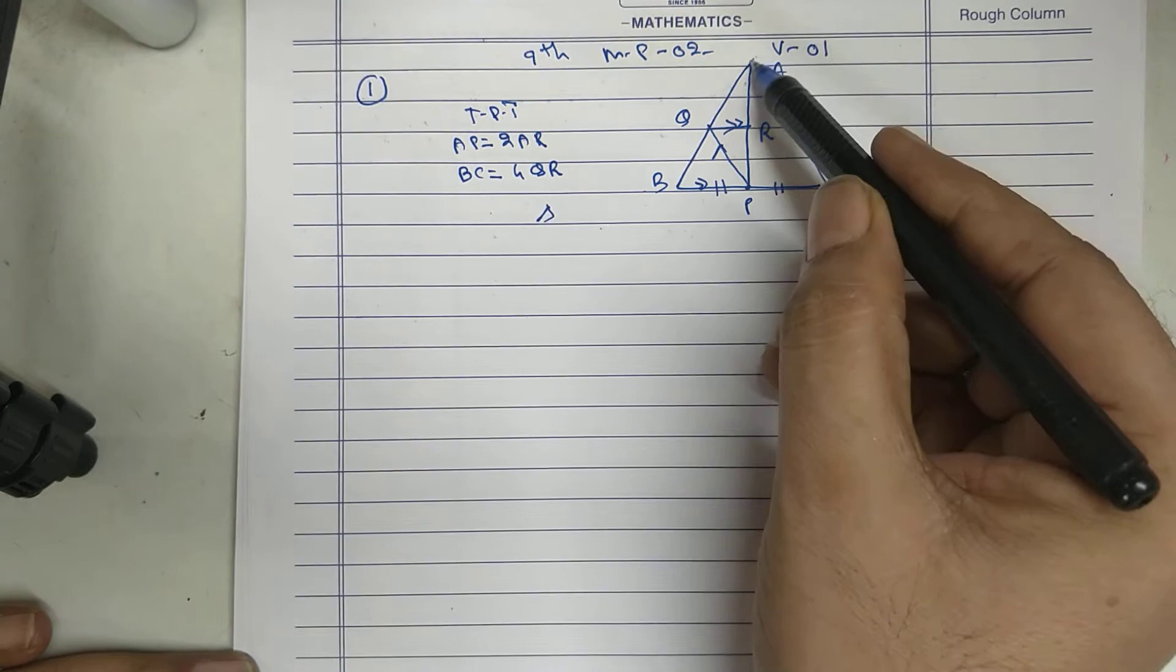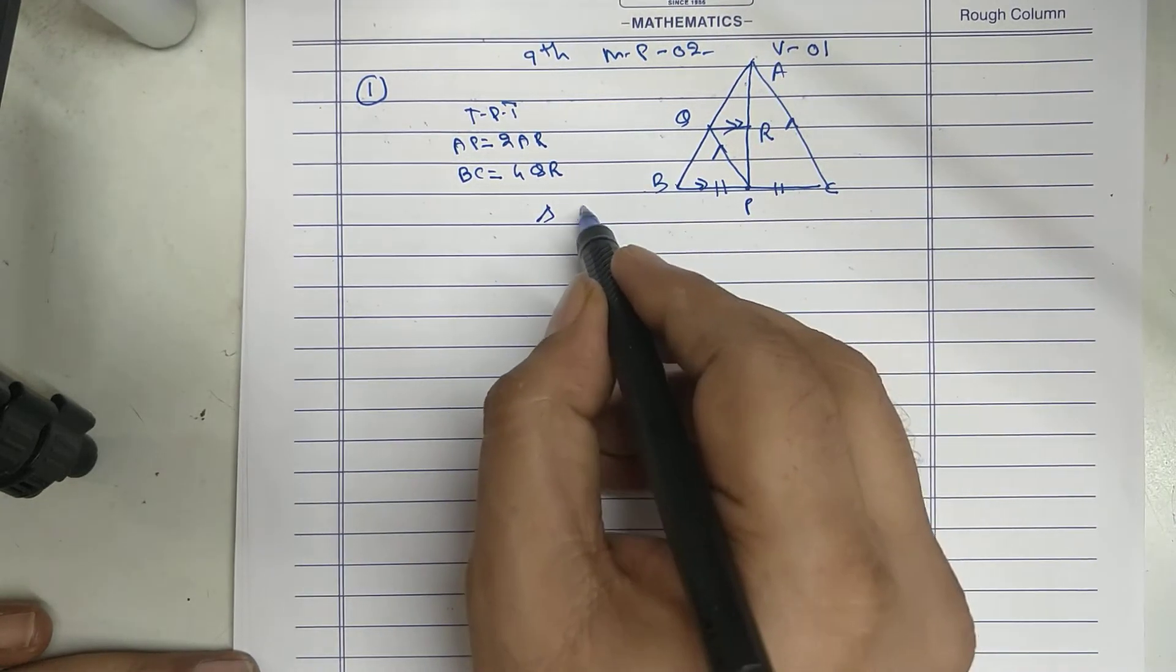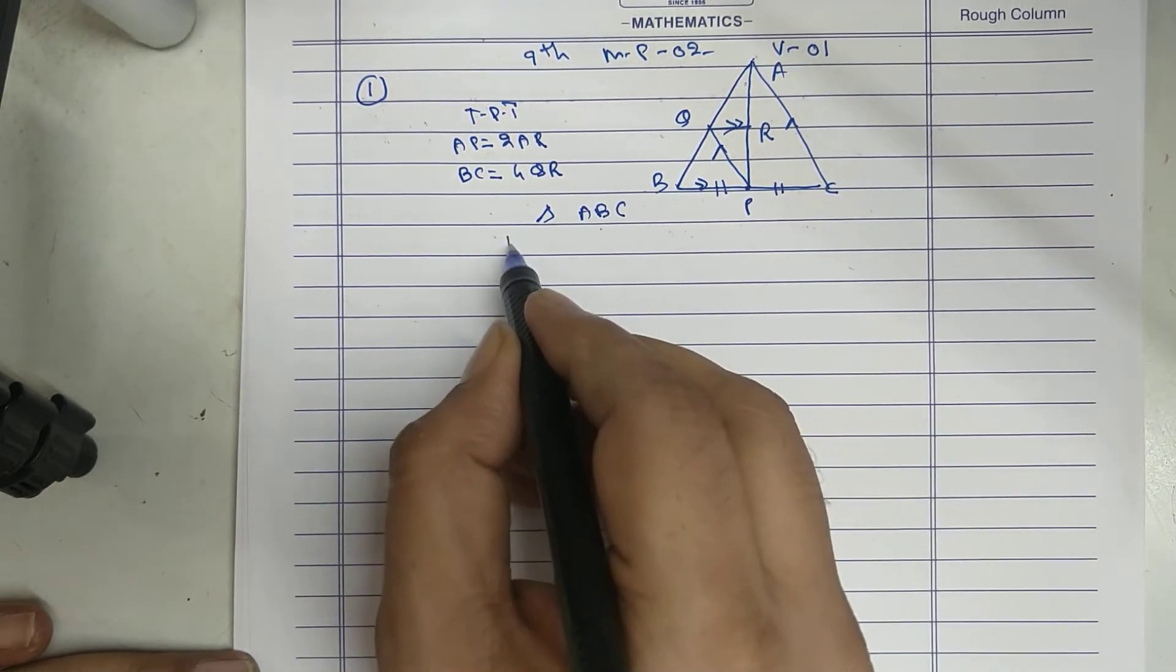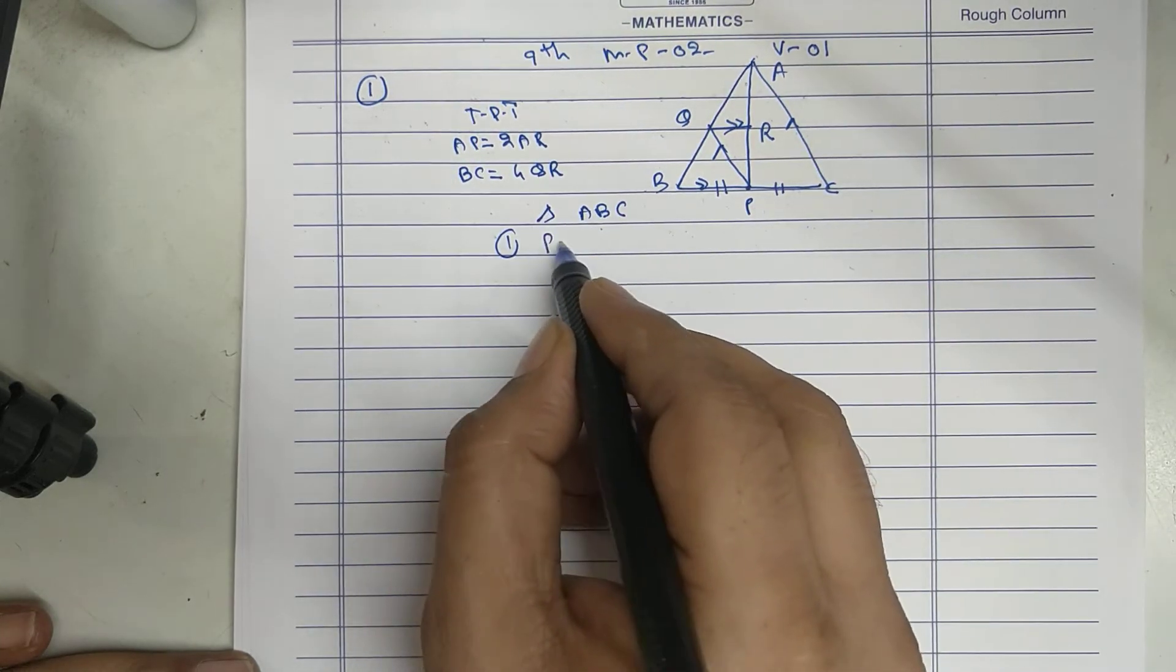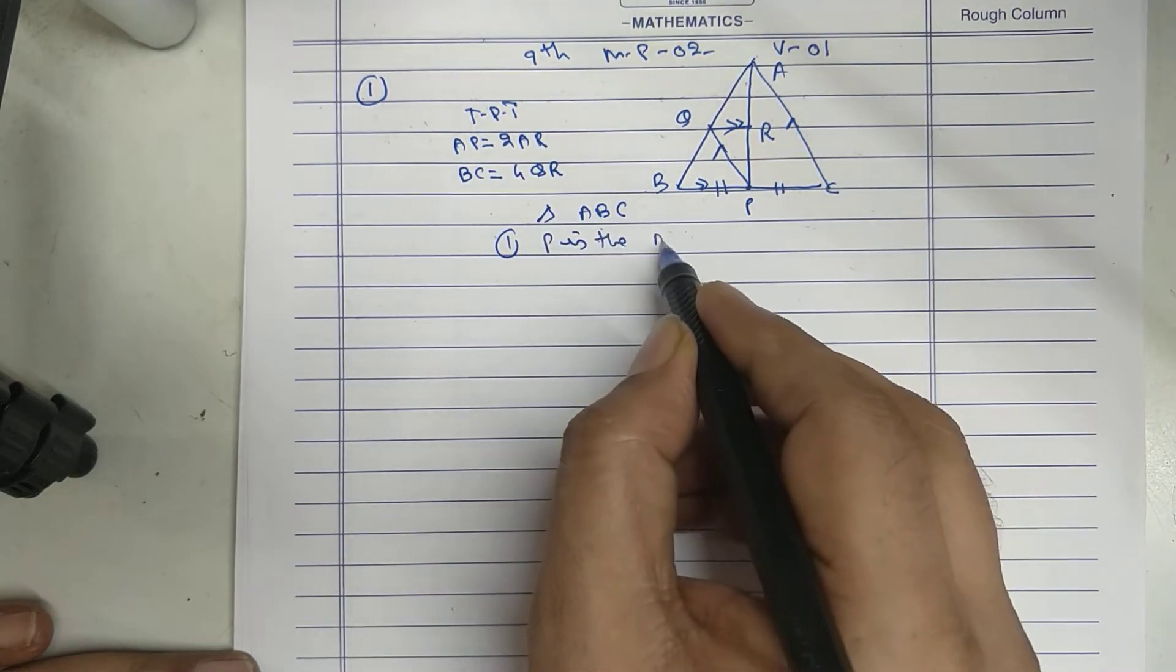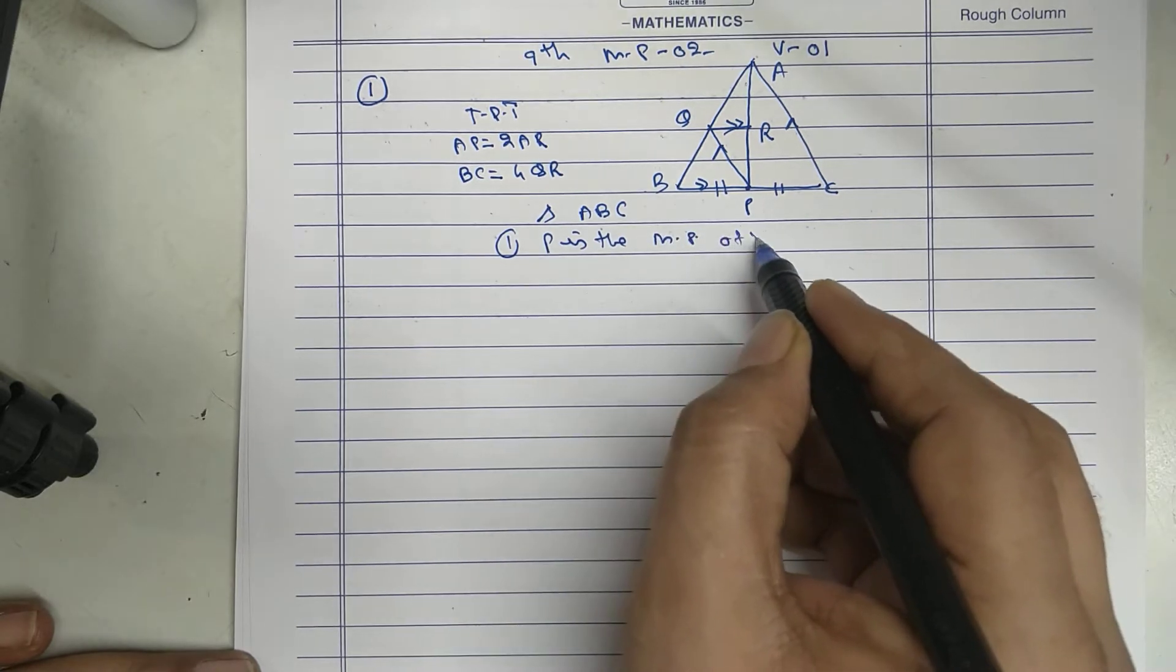Take triangle ABC, P is the midpoint of BC, given.